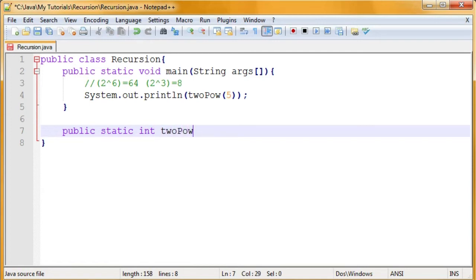And then int is going to be our return type because it's going to return an int. So, 2pow is the method name, and then for the parameter, it's going to be int n. Okay.